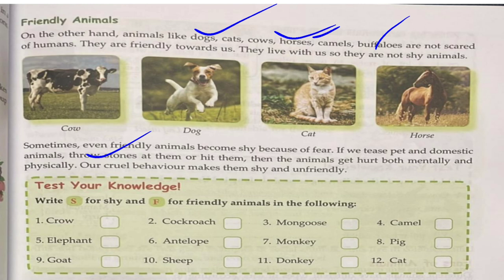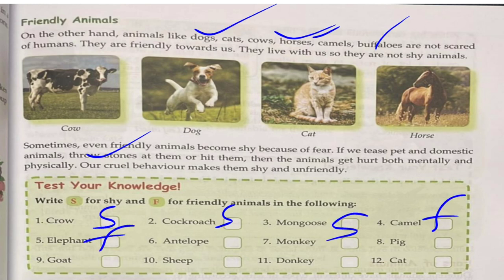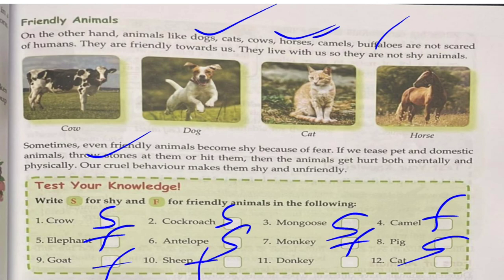We need to know which animals are shy and which are friendly. Cockroach is shy, camel is friendly, elephant is friendly, antelope is shy. Monkey can be both friendly and shy. Pig is shy, goat is friendly, sheep and donkey are friendly, cat is friendly.